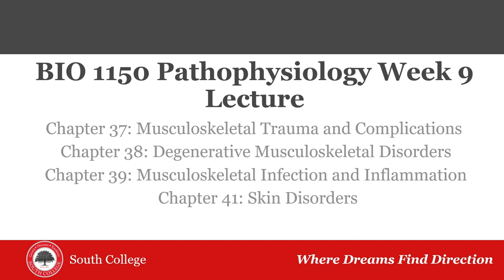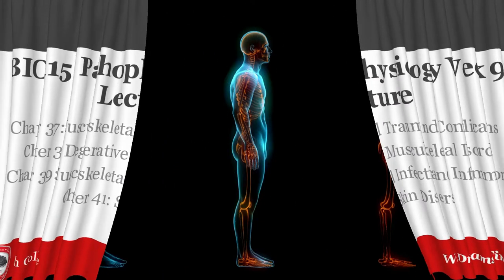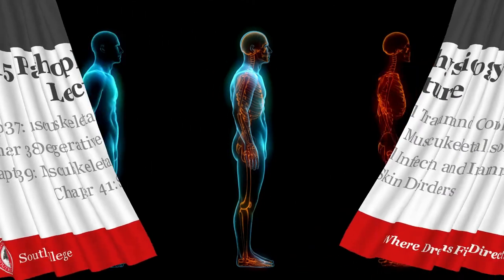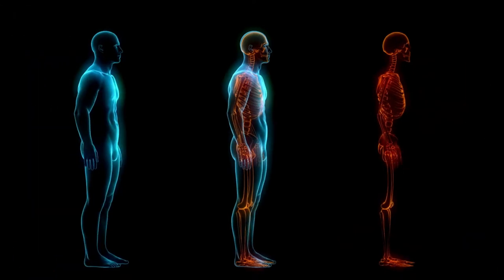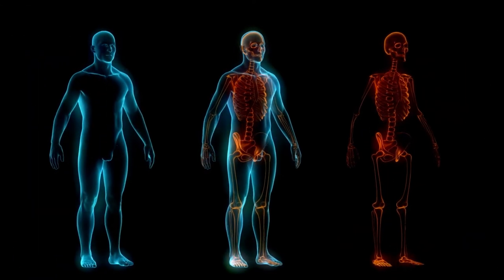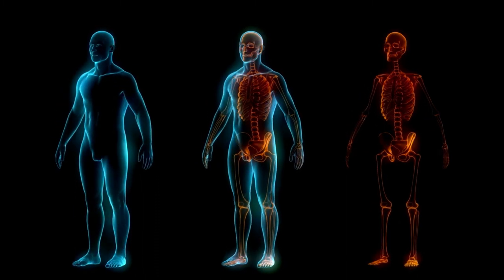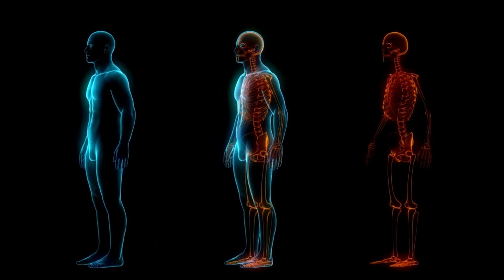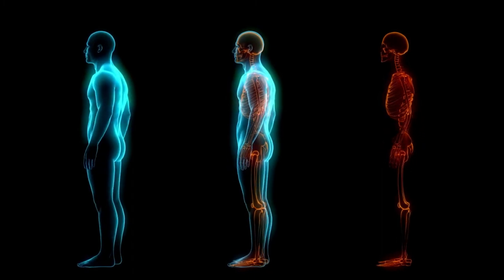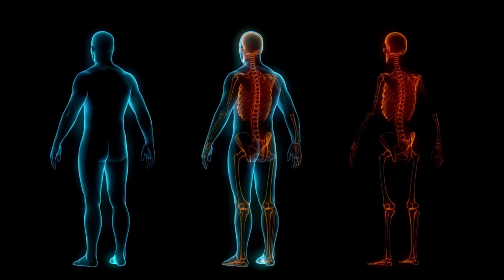Welcome to your week 9 lecture. You should have already read these four chapters by now. This week we covered the pathophysiology of the skin, muscles, and bones. We'll begin by reviewing the bones and muscles and talk about the trauma they can receive from injuries. We'll then look at autoimmune diseases and other pathologies of muscles and bones and end with the pathophysiology of the skin.